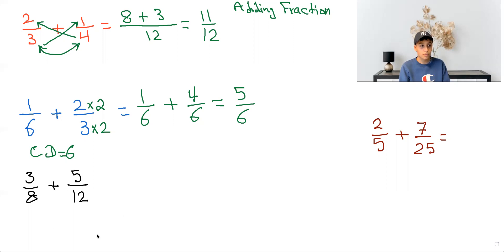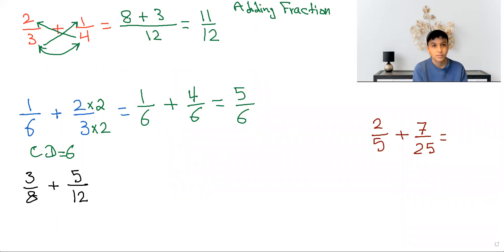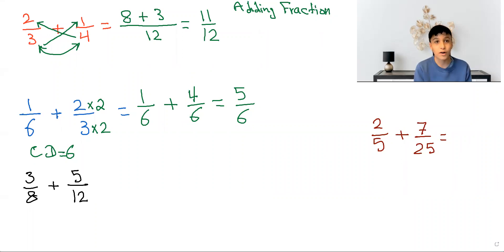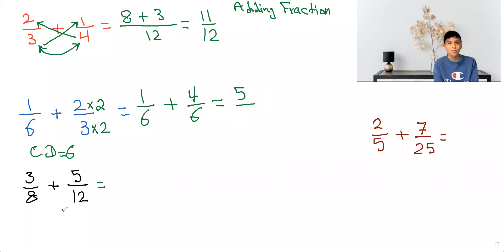So now we're going to go to the third method. When we add fractions, we have to find the lowest common denominator. To find the common denominator, you look at the biggest number and see if the smallest number can go into the biggest number. Since 8 can't go into 12, you look for the next multiple of 12, which is 24. And yes, 8 goes into 24, and therefore our lowest common denominator is 24.